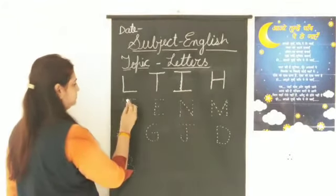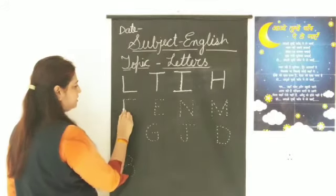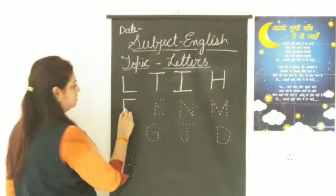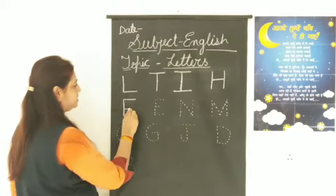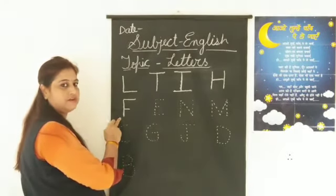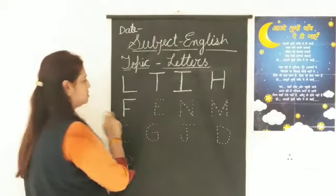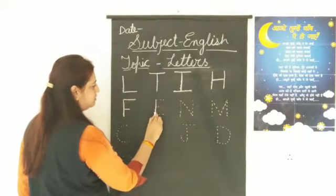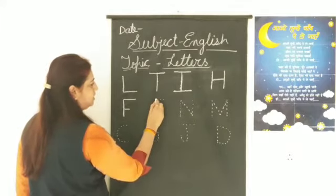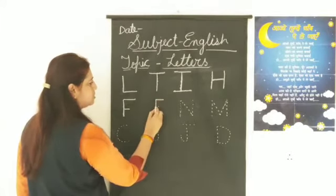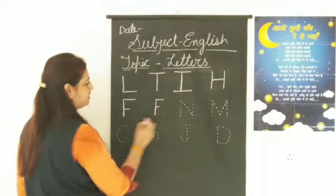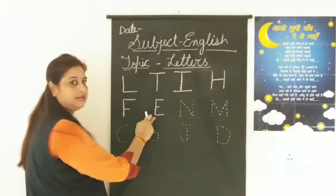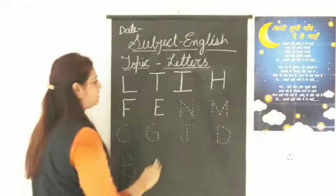F. Standing line, sleeping line, again small sleeping line. This is F. F for fish. E. Standing line, sleeping line, again sleeping line. This is E. E for elephant.